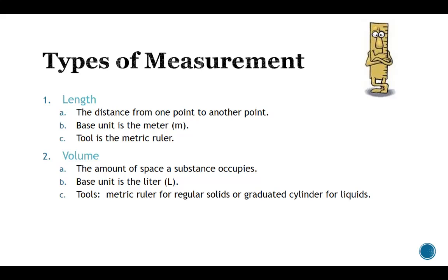The next is volume. Volume is the amount of space a substance occupies, and the base unit that we have here is the liter. Tools for metric ruler for regular solids, you can calculate length times width times height. There are all sorts of wonderful math equations to the volume of a cylinder, etc. Or you can use a graduated cylinder and do a submersion test for the solid if possible, or to just pour the liquid into the graduated cylinder if you're measuring liquids. So that's length and volume.